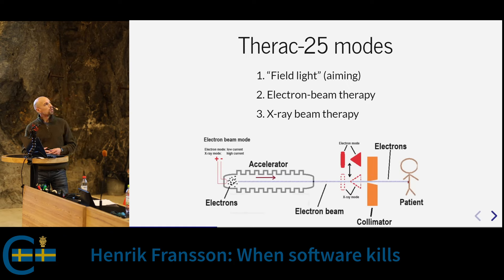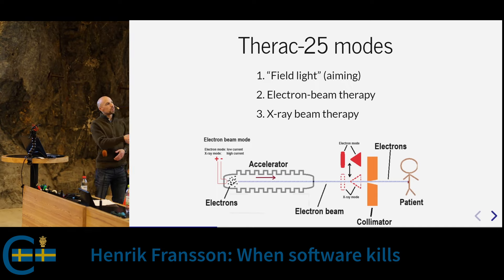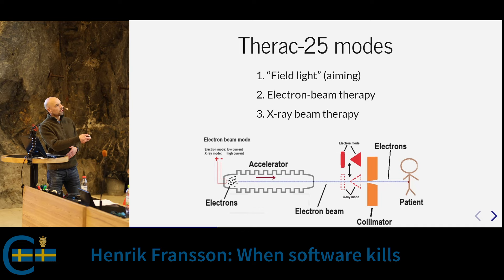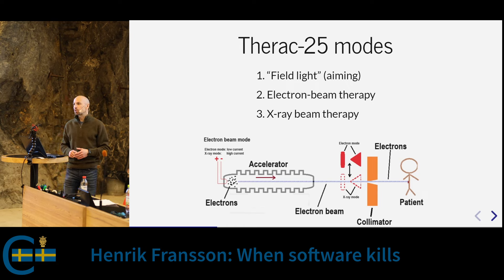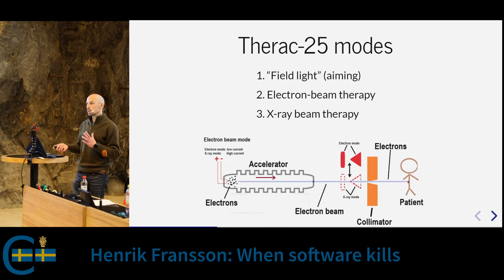Switching between electron beam and X-ray beam essentially meant moving the metal target and beam filter out of the way of the electron beam, so the beam travels straight to the patient. You also need to adjust the electron cloud current, because without the metal slab you get a very strong electron beam. In X-ray mode you need a much higher current — we're talking about a hundred times higher or lower between the two modes.